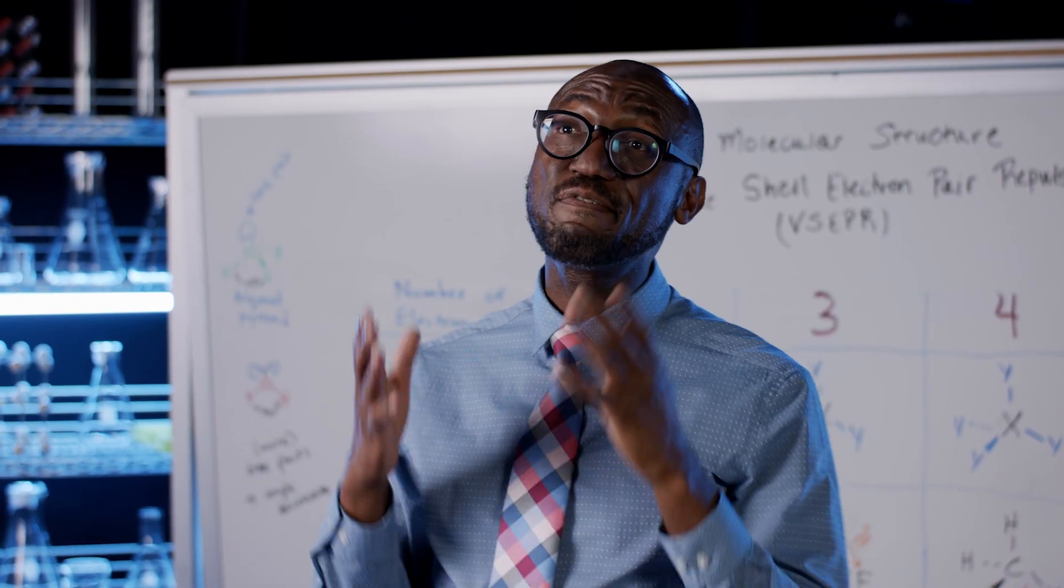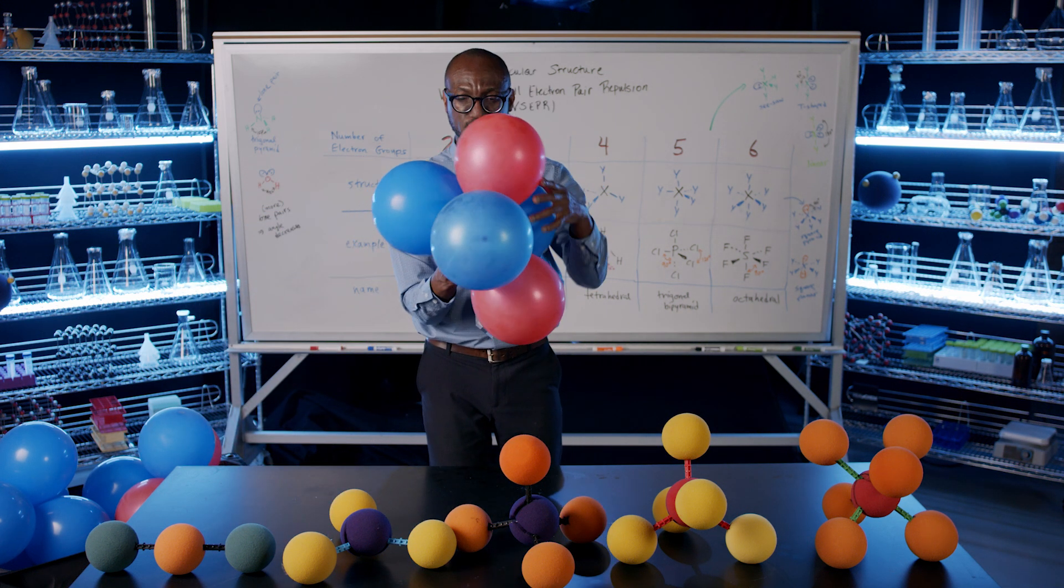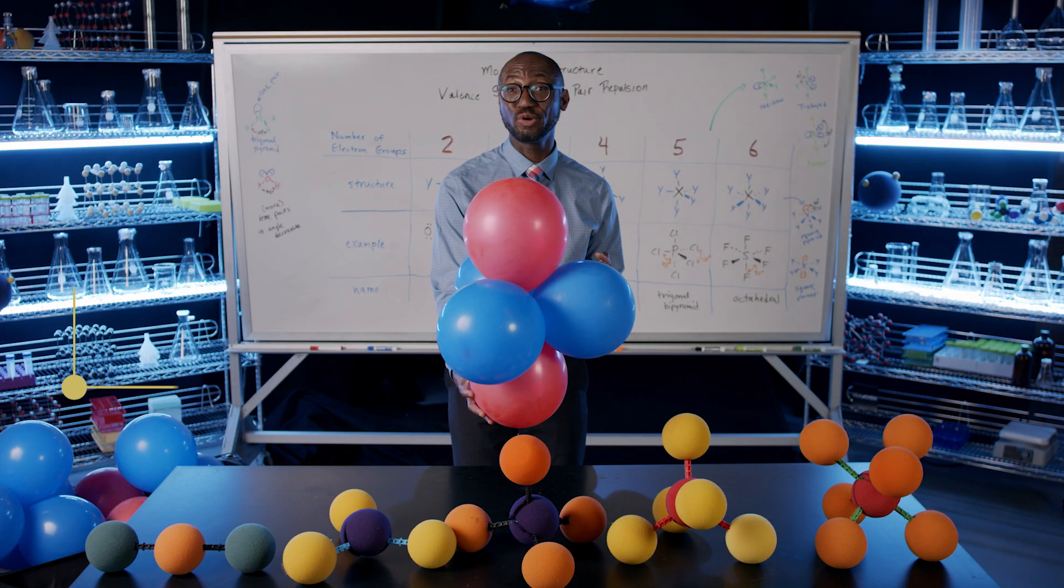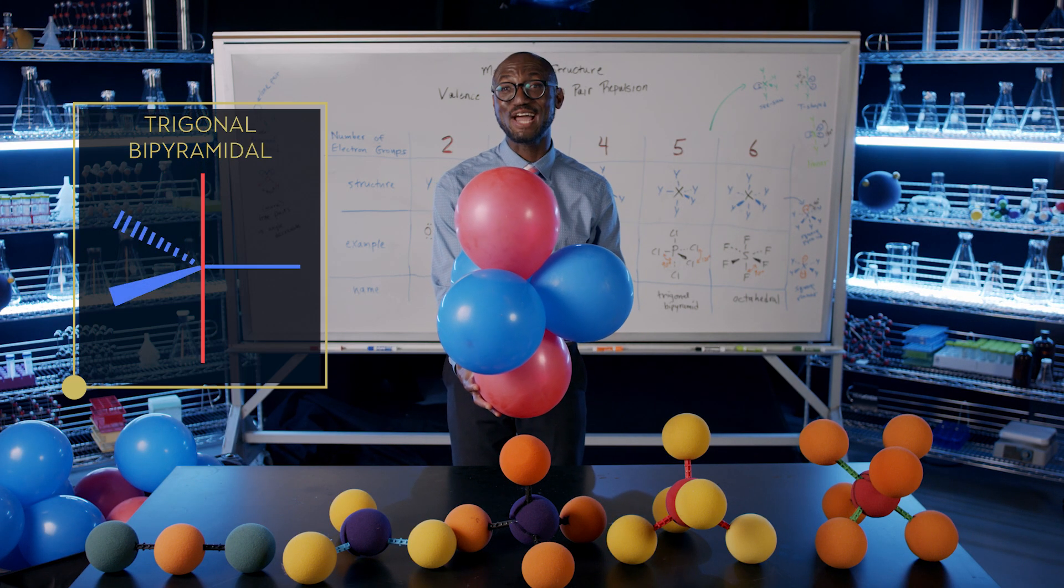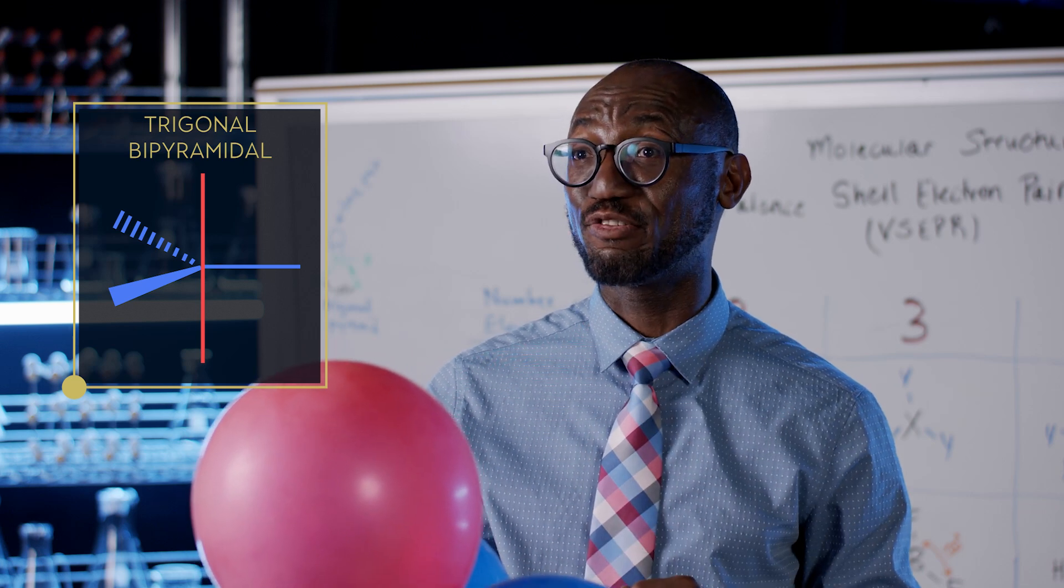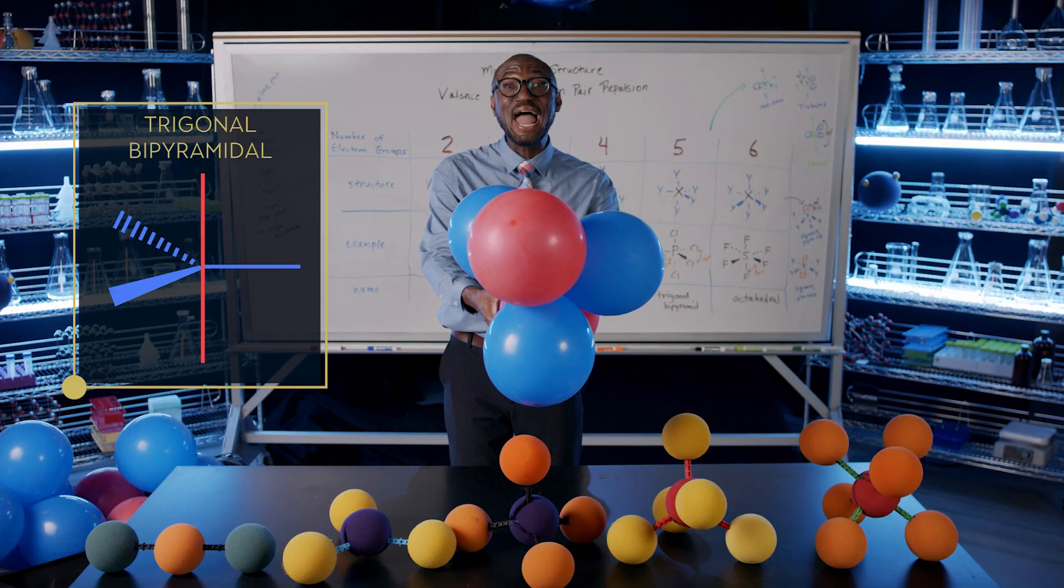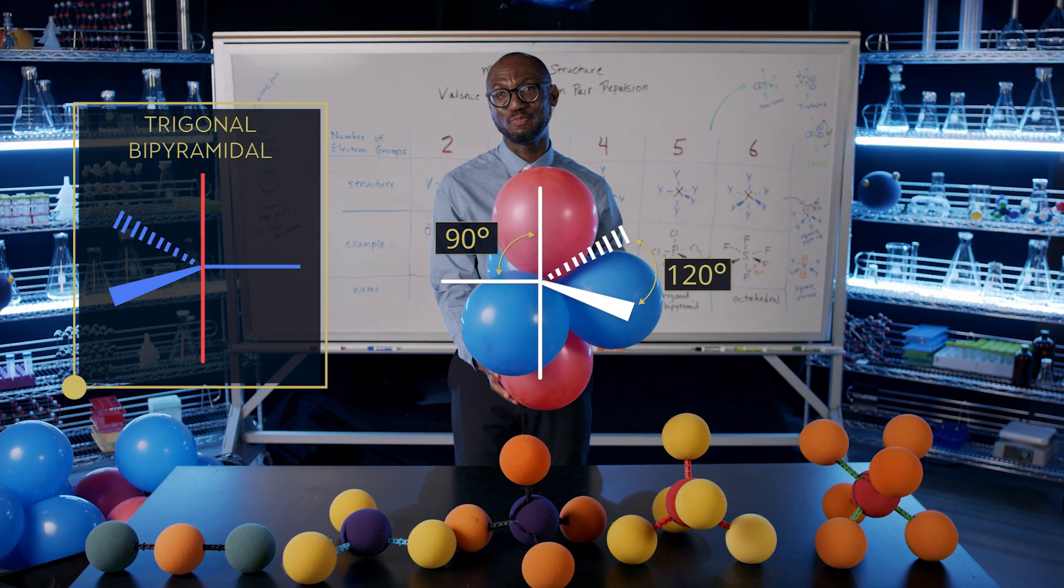Let's see if we can add a fifth balloon. This is like a trigonal planar shape called equatorial, with an electron group above and below called axial. If I take the model, you can see that there are two different angles in the structure. One of 120 degrees within the trigonal planar and 90 degrees between the equatorial and the axial positions.